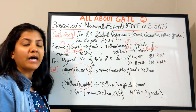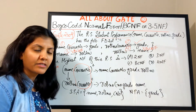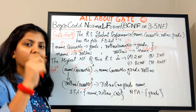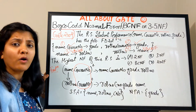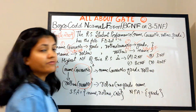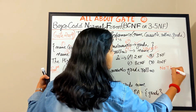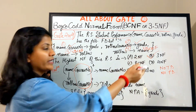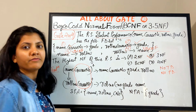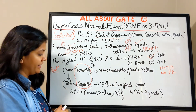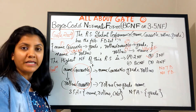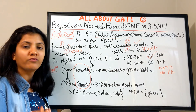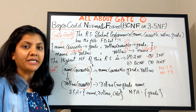This relation has no partial dependency and no transitive dependency, but it has conditions that violate BCNF. Therefore, the highest normal form is 3NF. It satisfies 2NF as well, but the highest normal form is 3NF. This makes it very clear how to check for the highest normal form and how to identify violations of BCNF.